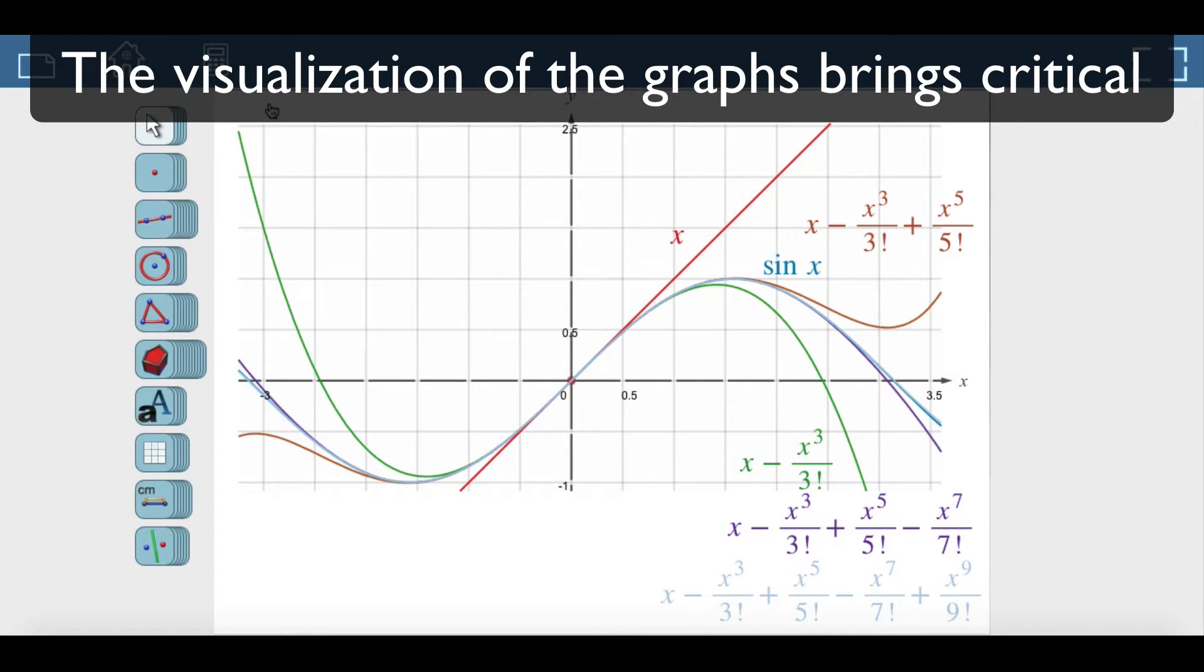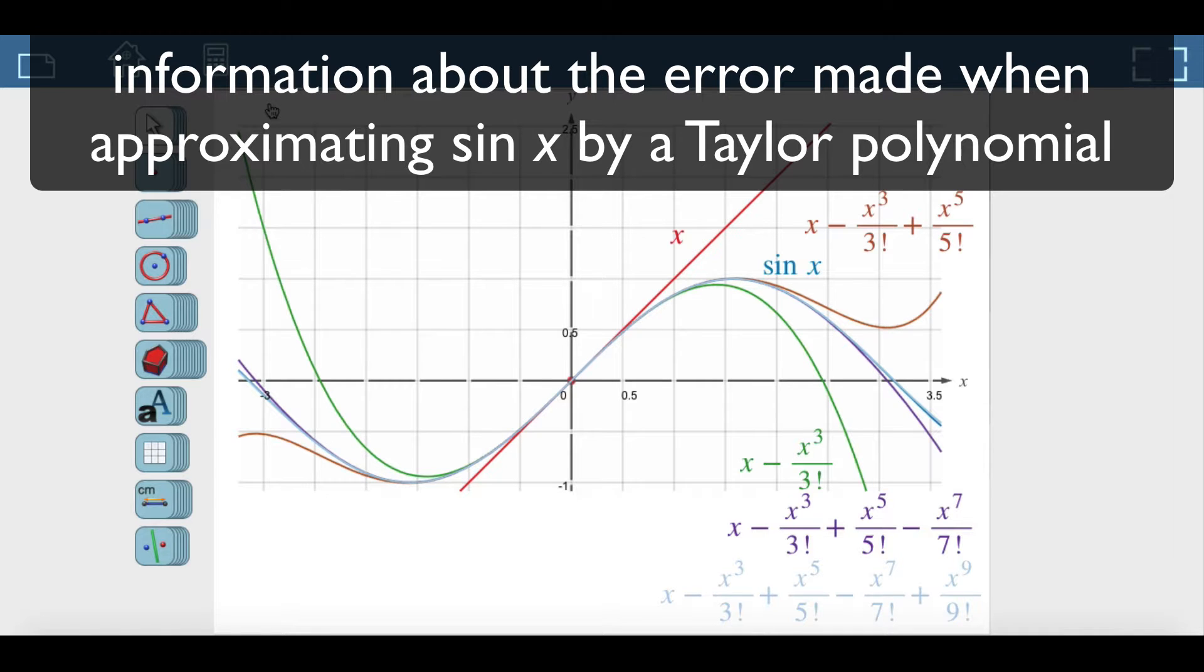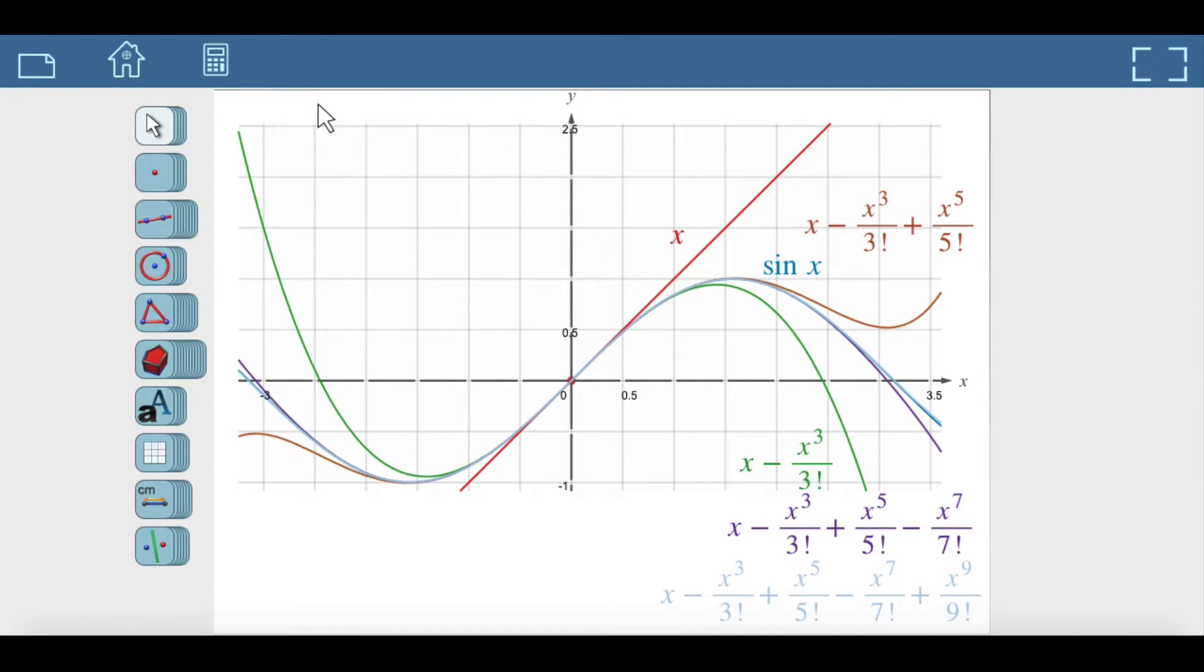The visualization of the graphs brings critical information about the error made when approximating sine x by a Taylor polynomial. When the graph of one Taylor polynomial is below the graph of sine x, the graph of the next Taylor polynomial is above the graph of sine x and conversely.